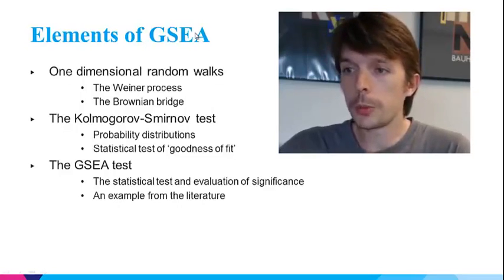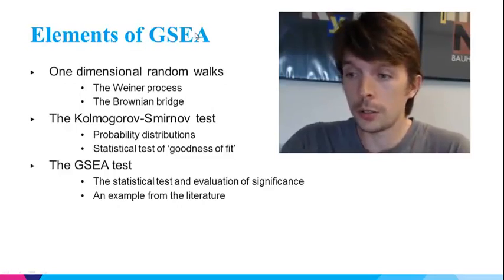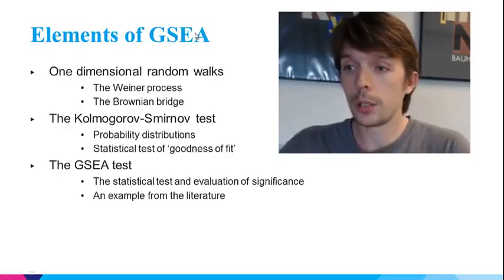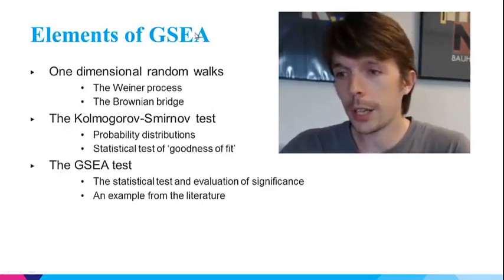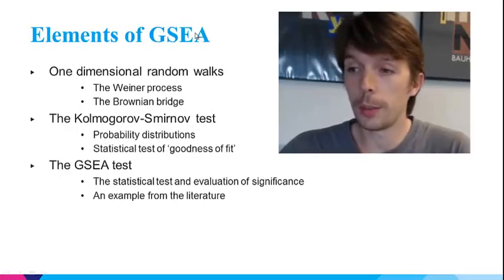This first part will be spent looking at random walks in one dimension, which are essential for understanding the Kolmogorov-Smirnov test. This is the statistical test that inspired Gene Set Enrichment Analysis, which retains much of this test of goodness of fit. In the second part, I'll take you through Gene Set Enrichment Analysis by applying it to a small example data set, during which you will be able to see all the inner workings of the method.